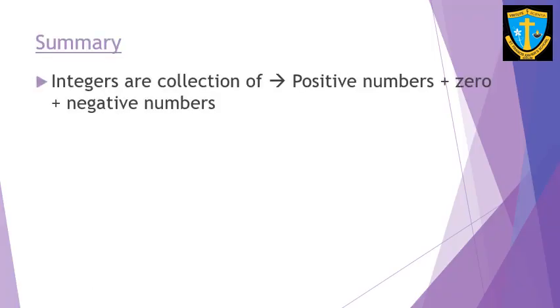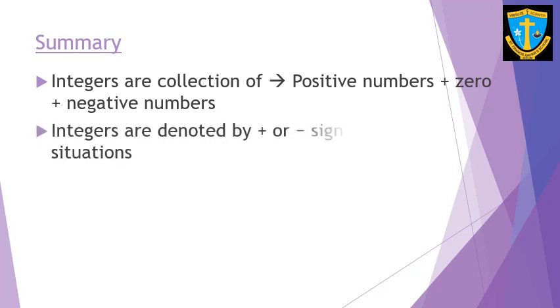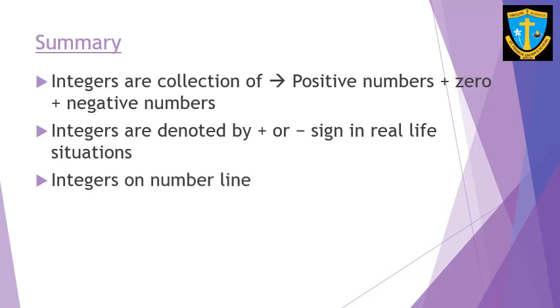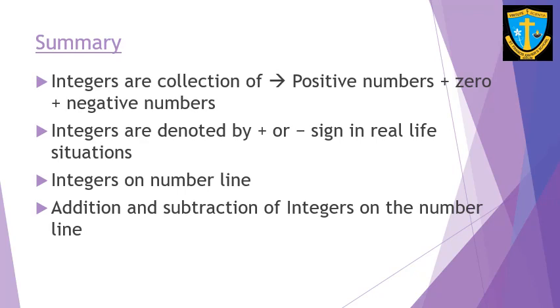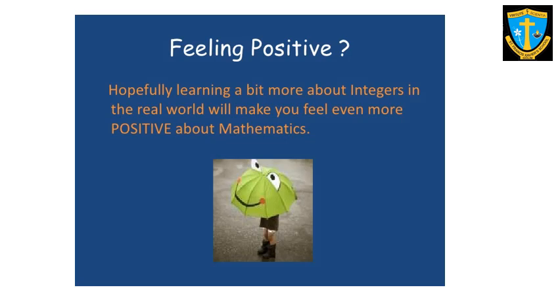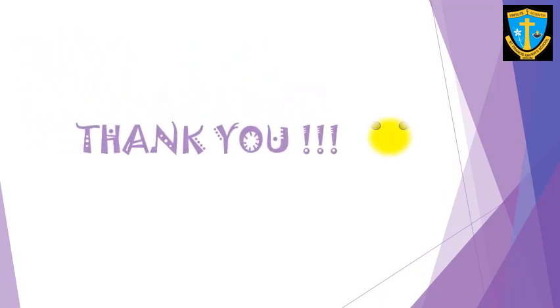What have we learnt today? Integers are a collection of positive numbers, zero, and negative numbers. Integers are denoted by positive or negative signs, and we have seen real-life examples of integers. We have seen integers on the number line, and addition and subtraction of integers on the number line. Hopefully learning more about integers in the real world will make you feel even more positive about mathematics. Thank you students, god bless you all, take care and stay safe.